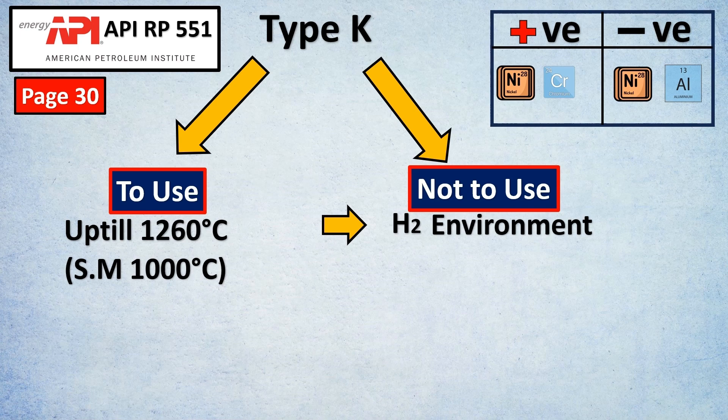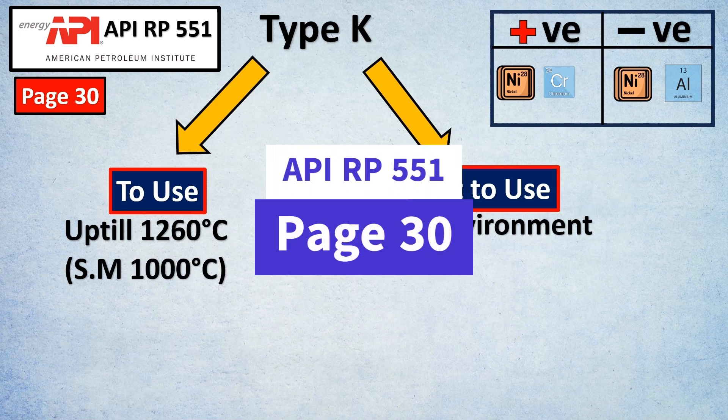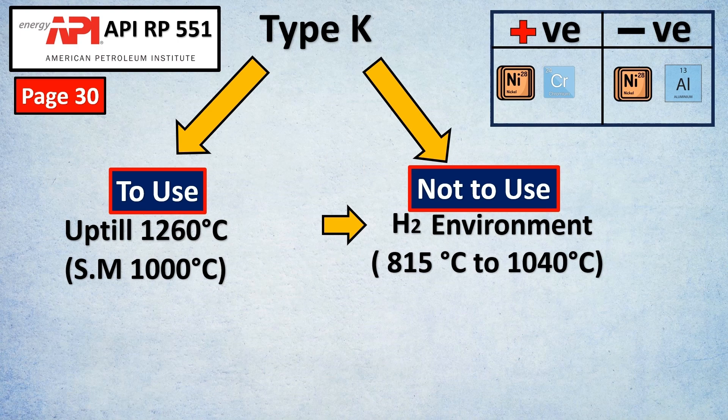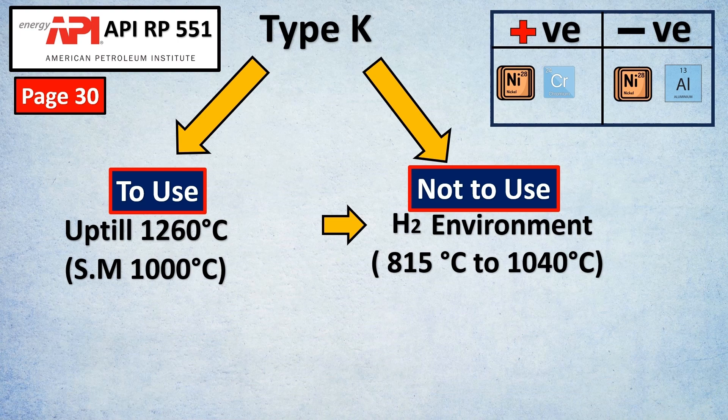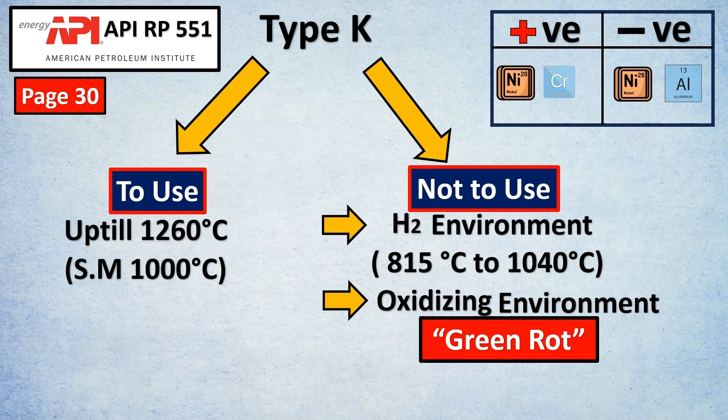Then you cannot use this in H2 environment as per API RP standard. Why? Especially between 800 to 1000 degree Celsius range. Why? Because a thermocouple when it is put in the service of hydrogen at such high temperatures, the hydrogen would break at such high temperatures and these H1 molecules will basically try to hit the sheath, then the thermocouple and enter inside the thermocouple and damage and give you false readings. Also in oxidizing environment it is preferred not to use K type thermocouple because of the green rot effect.